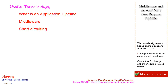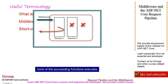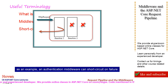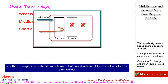What is short-circuiting? A function can short-circuit the pipeline by not calling its successor — none of the succeeding functions executes. The response is sent back from the point of short-circuit. As an example, an authentication middleware can short-circuit on failure. Another example is a static file middleware that can short-circuit to prevent any further processing.